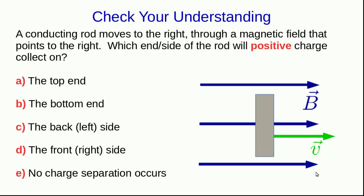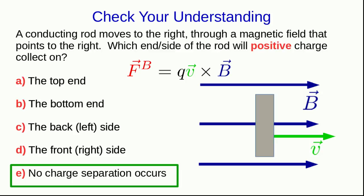To see the answer here, you have to just realize that we're talking about a magnetic force acting on charges in this conducting rod, and that involves a cross product between the velocity and the B-field. And here we have a velocity vector that's parallel to the B-field, and we know that a cross product comes out as zero in that case.